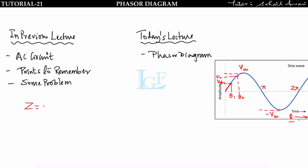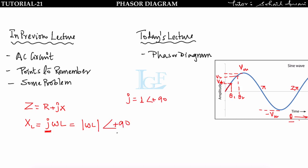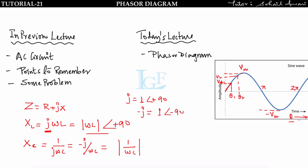Any impedance Z can be represented as R + jX, where X is the reactance. For inductance, XL = jωL; the j term defines its phasor, so we can represent it as ωL∠+90°. For capacitance, Xc = 1/(jωC). Moving j to the numerator gives −j/(ωC), which in phasor form is (1/ωC)∠−90°.